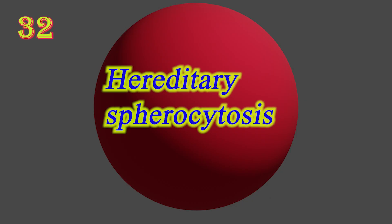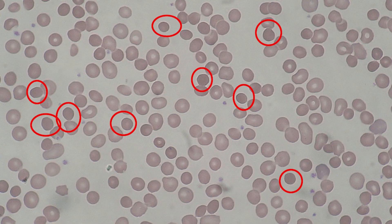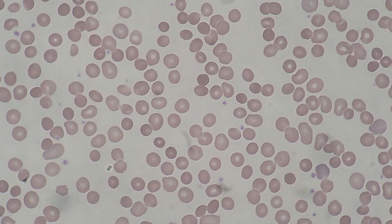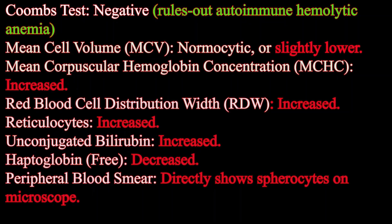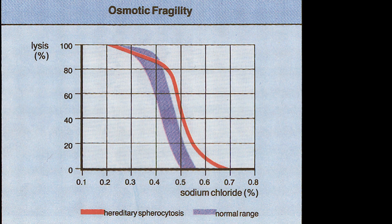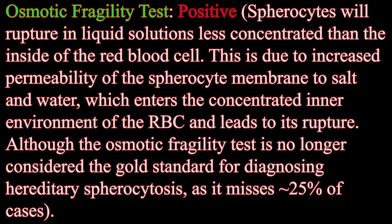Hereditary spherocytosis is a congenital hemolytic disorder where a genetic mutation coding for a structural membrane protein leads to a spherical shape of erythrocyte cellular morphology. The difference in shape makes the red blood cells more prone to rupture under osmotic and mechanical stress.